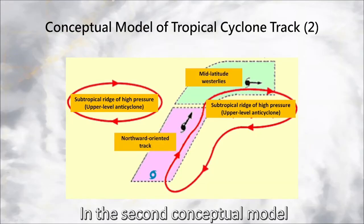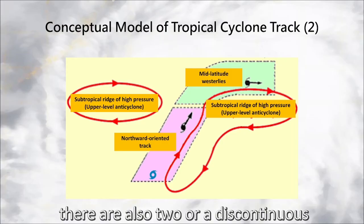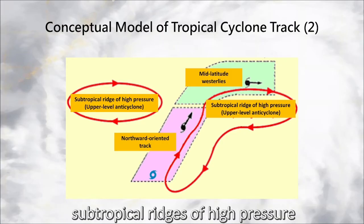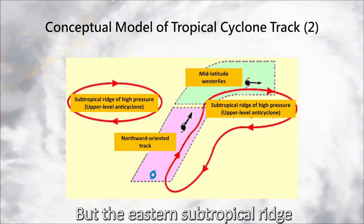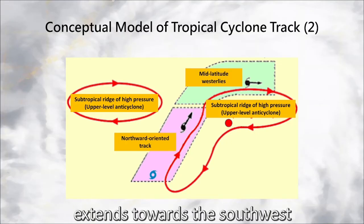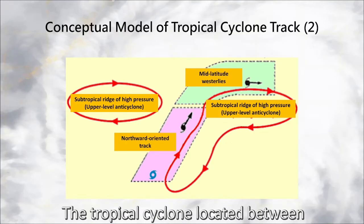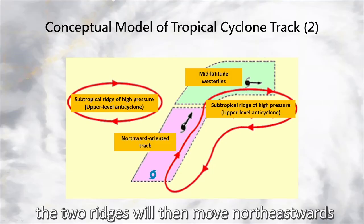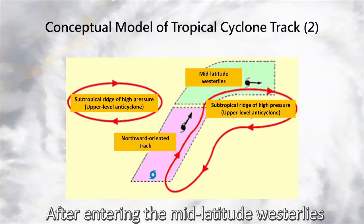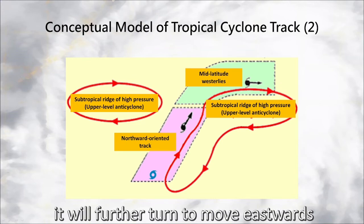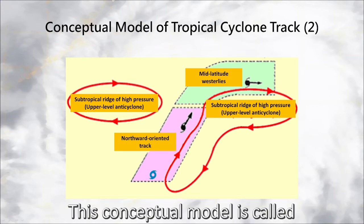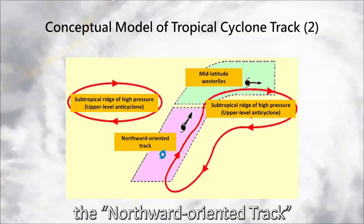In the second conceptual model, there are also two or a discontinuous subtropical ridges of high pressure, but the eastern subtropical ridge extends towards the southwest. The tropical cyclone, located between the two ridges, will then move northeastwards. After entering the mid-latitude westerlies, it will further turn to move eastwards. This conceptual model is called the northward-oriented track.